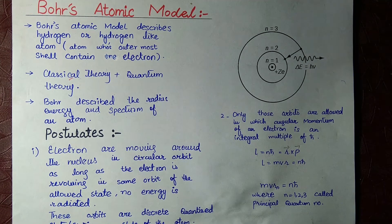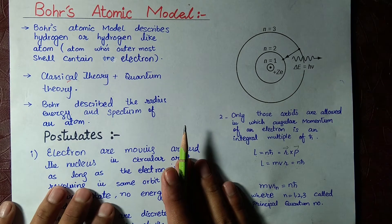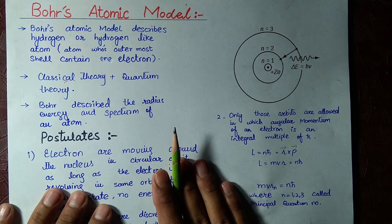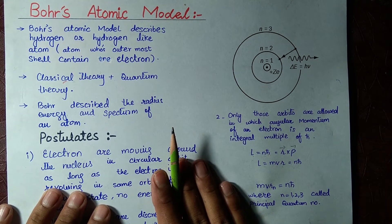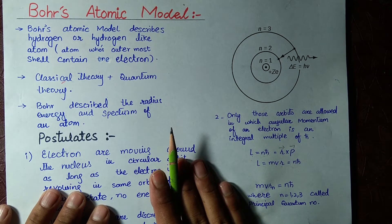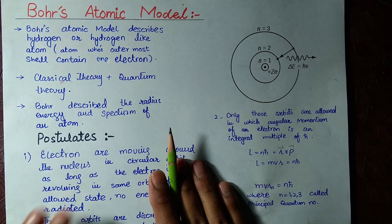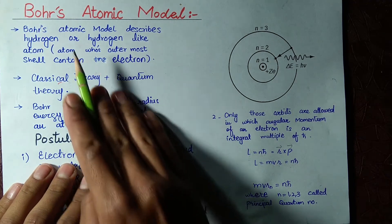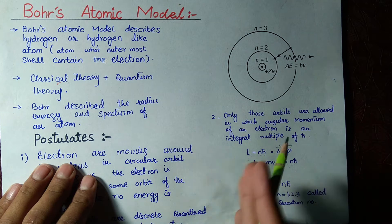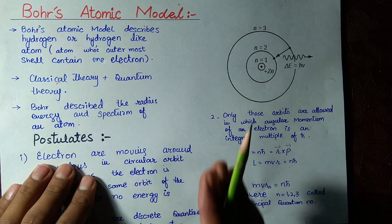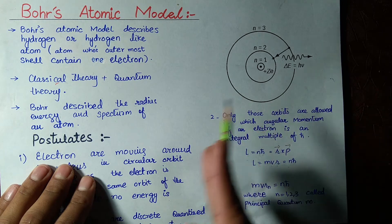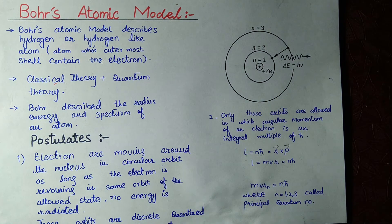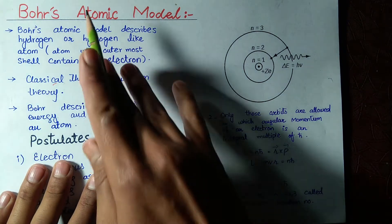Hello everyone, assalamu alaikum and welcome back to Learn Daily Physics. Today we've started a new lecture series for atomic and molecular physics. We are first going to talk about the atomic part and then the molecular part. The first topic, as you can see on your screen, is Bohr's atomic model — the simplest starting model which describes the radius, energy, spectrum, and many other things.